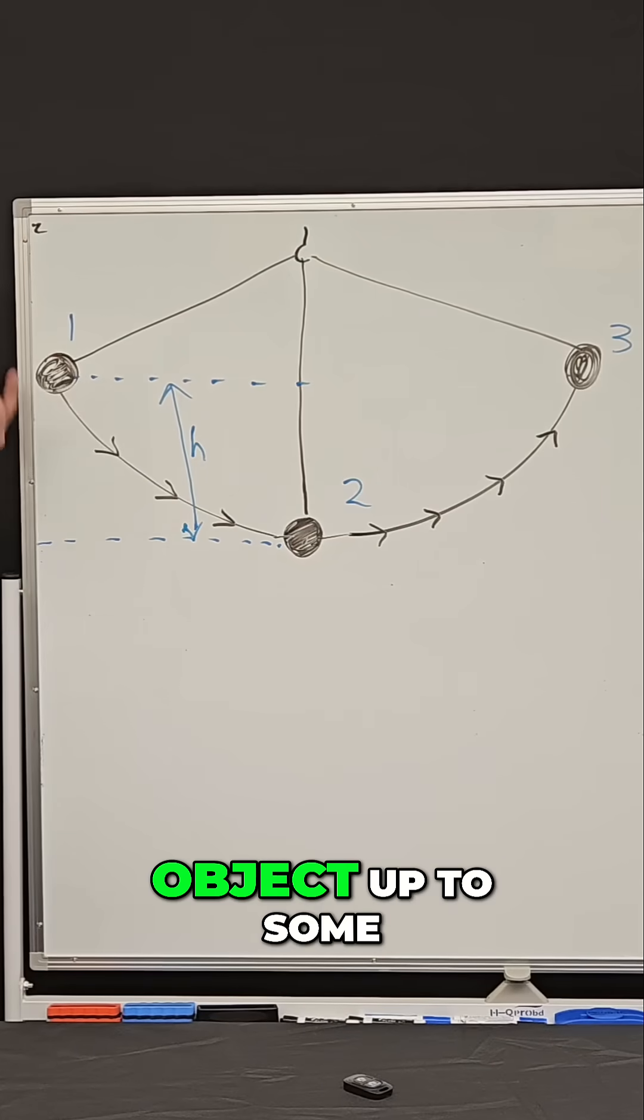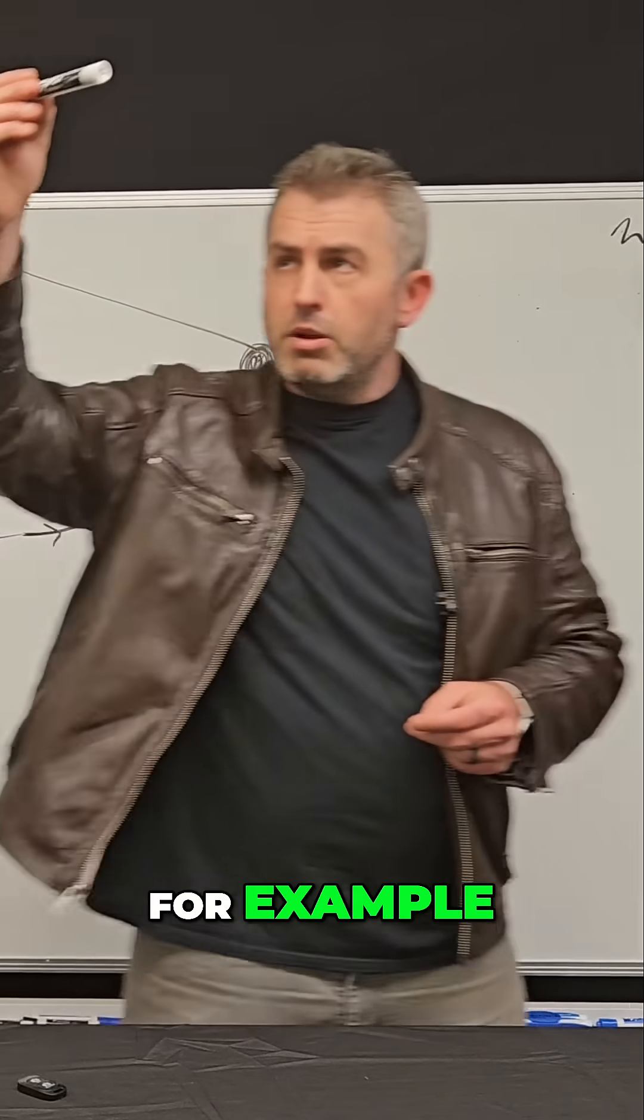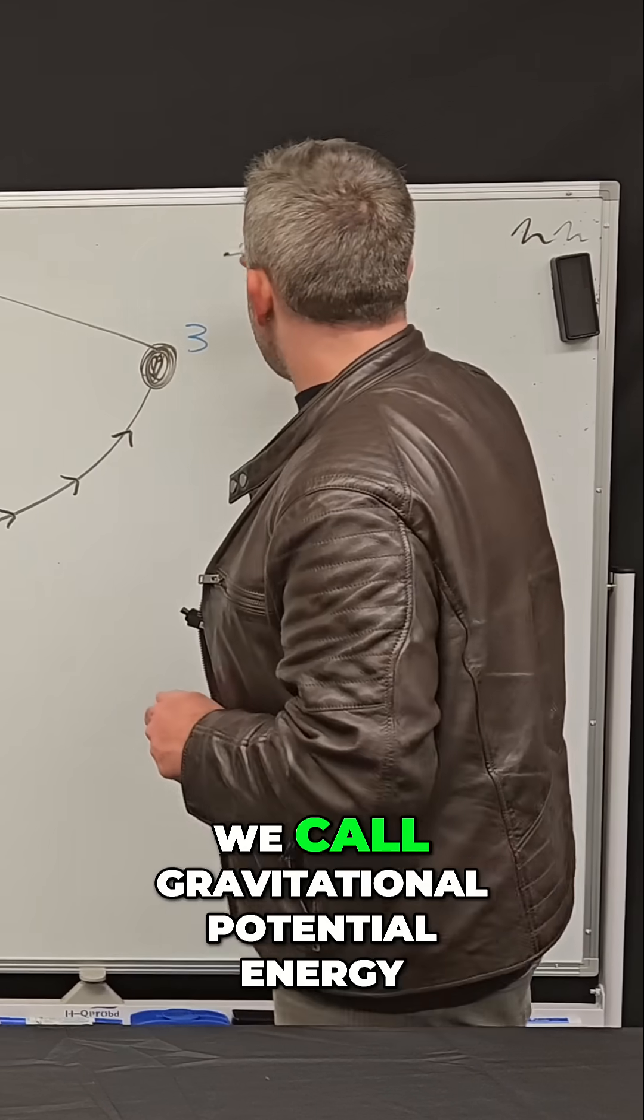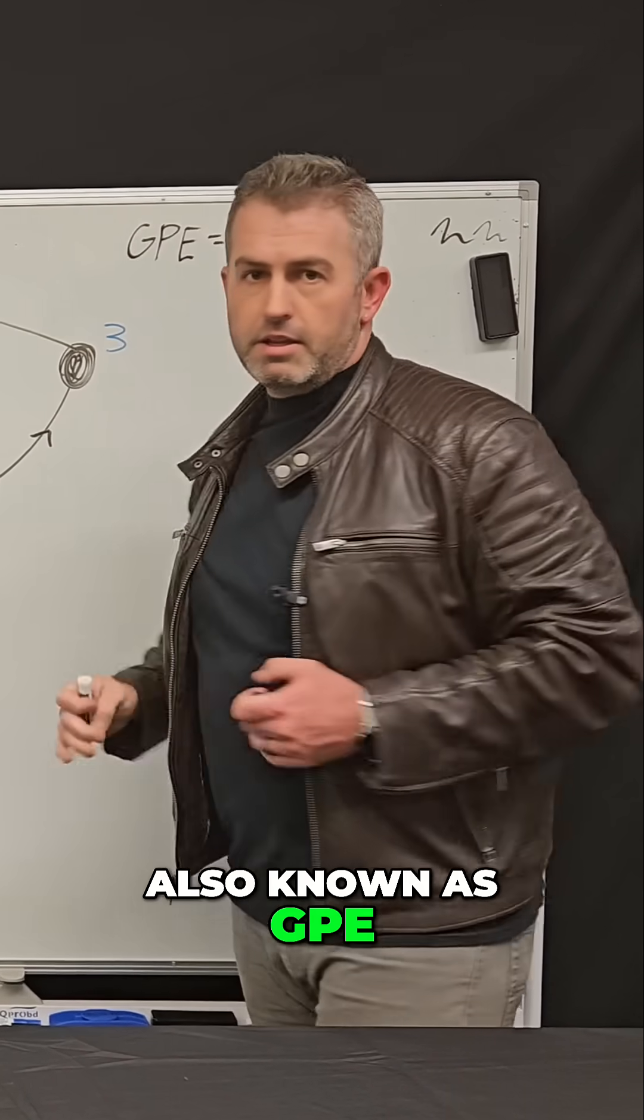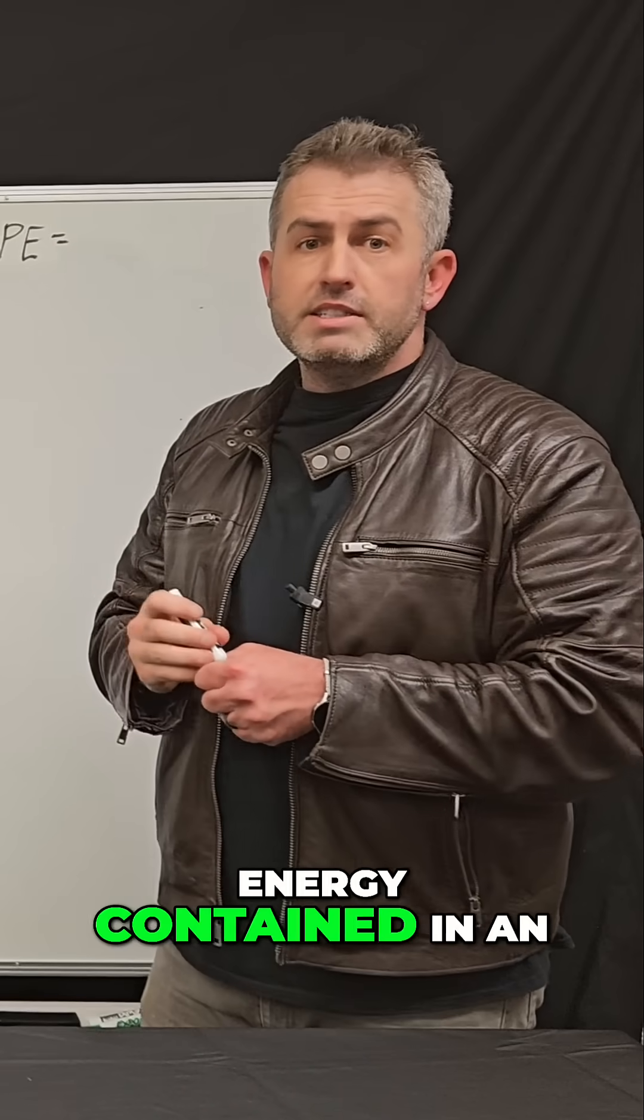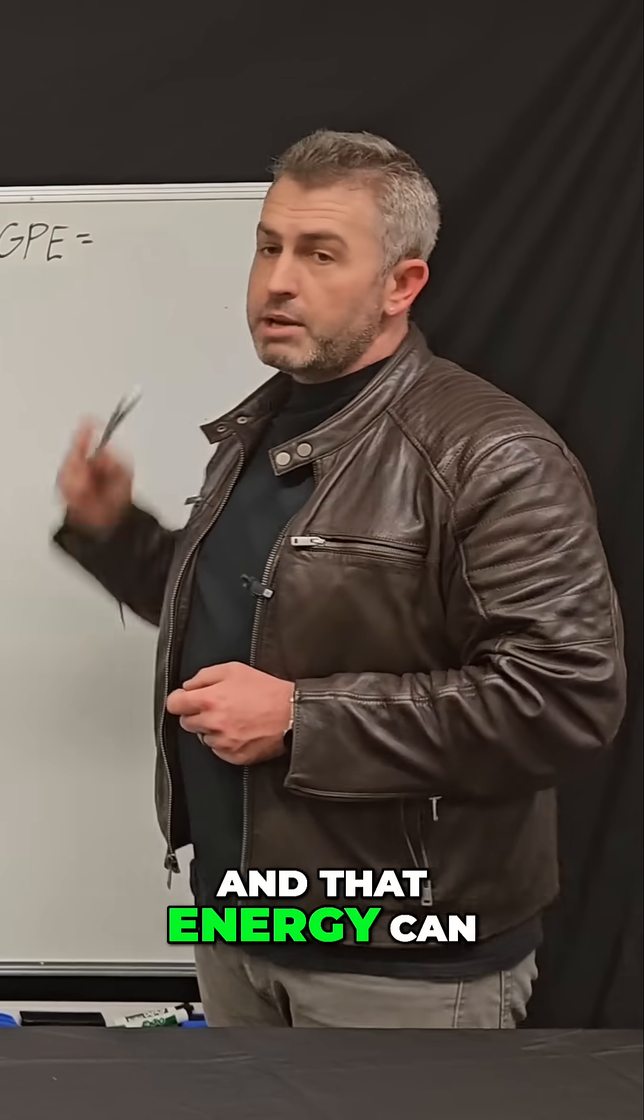So when you lift an object up to some height above the ground, like this pen for example, you give it what we call gravitational potential energy, also known as GPE. And that is the energy contained in an object due to its position above the ground. And that energy can be calculated.